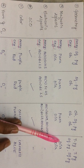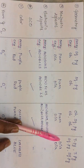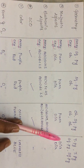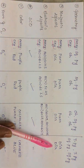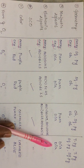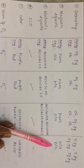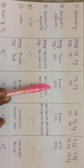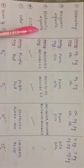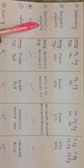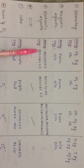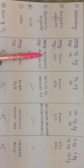In hemerythrin, the deoxy form is paramagnetic whereas the oxy form is diamagnetic due to a very strong antiferromagnetic coupling. In hemocyanin, the deoxy form has copper(I) with a d¹⁰ configuration, so it is purely diamagnetic with no unpaired electrons. In the oxy form, there are two unpaired electrons — one on each copper — but due to strong antiferromagnetic coupling it behaves as diamagnetic. All these are EPR silent.